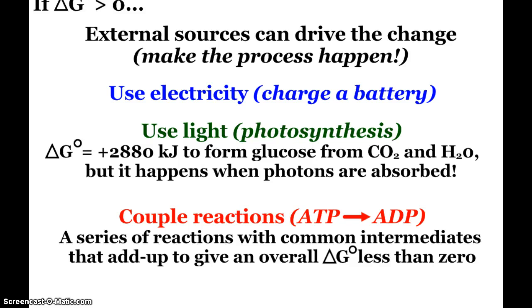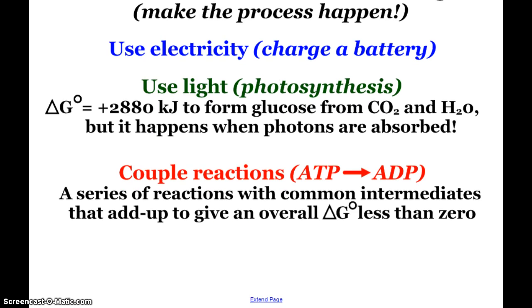Also, for like AP Bio people and whatnot, but there's this thing called coupling of reactions, like in the conversion of ATP to ADP. But you can have a series of reactions that have common intermediates. And then when you add up these reactions, overall you get a ΔG less than 0. So again, we see that much more often in biochemistry, cellular processes. But I know there's a little article in your book about it. Or if you need to look that up because you're interested in it, by all means go ahead and do that.